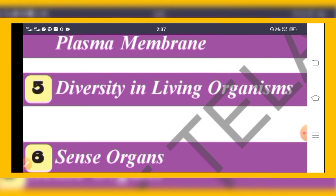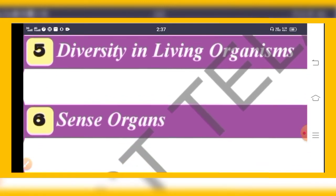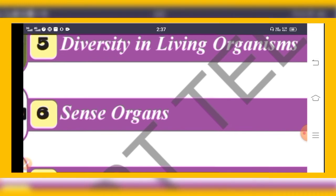For example, in a classroom of 40 members, each member is different in height, color, and weight — that is diversity among those people. The sixth chapter is Sense Organs, which are most important for organisms to sense whatever is happening in their surroundings.